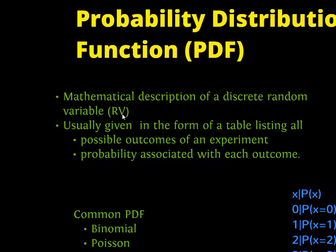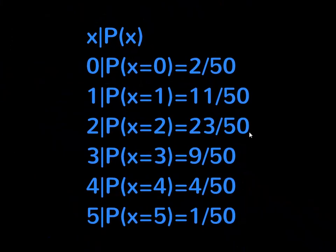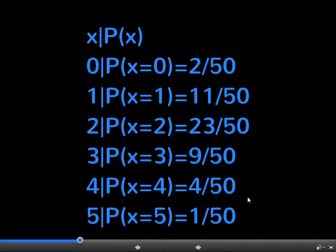We're going to list them in a table. So here, this is a simple one. We have 50 things that are occurring. This is our total number of things that are occurring. The probability of getting 0 is 2 out of 50. The probability of getting 1 is 11 out of 50. The probability of getting 2 is 23 out of 50. These things have to add up to 50.